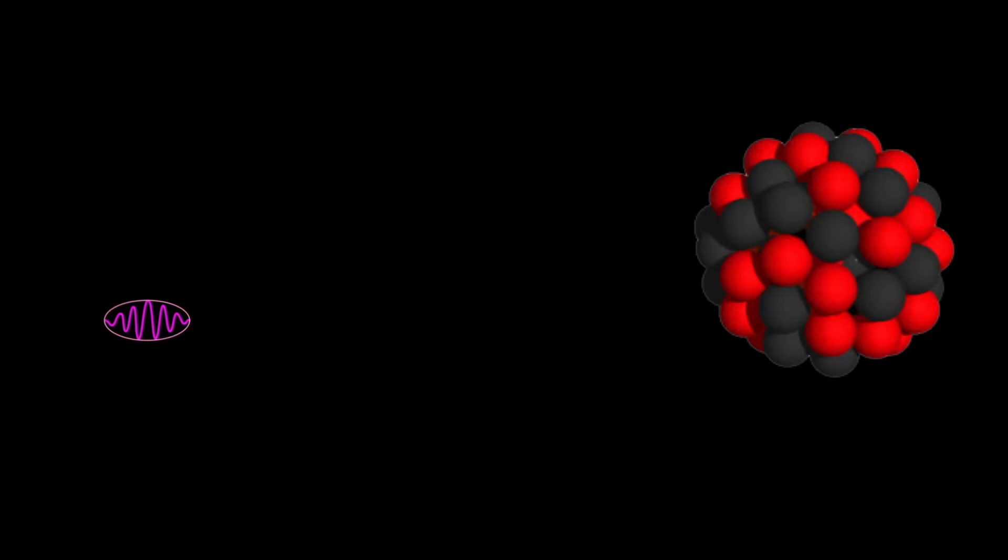All this revolves around Einstein's famous equation E=mc². In pair production, a high energy photon interacts with the nucleus of an atom, usually a large atom, producing two particles.